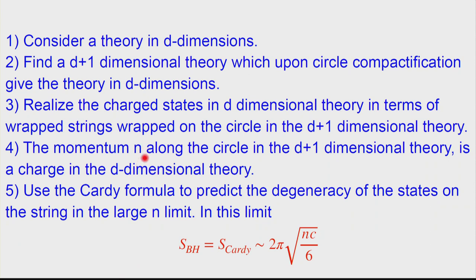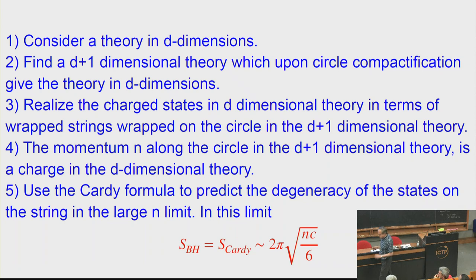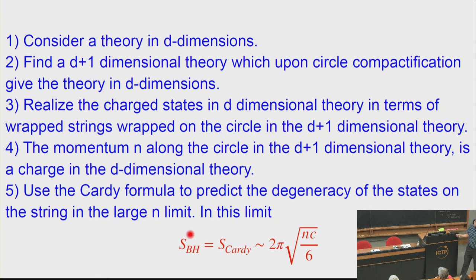In the limit of large momentum around the circle, you can use the Cardy formula. If you know what lives on this string — in particular, its central charge — you can predict how many states live on it asymptotically, using the formula Cardy found: via modular transformation, the partition function gets related to q to the minus c over 24. Using that behavior, you estimate the asymptotic growth of states and account for the black hole entropy for large enough n.